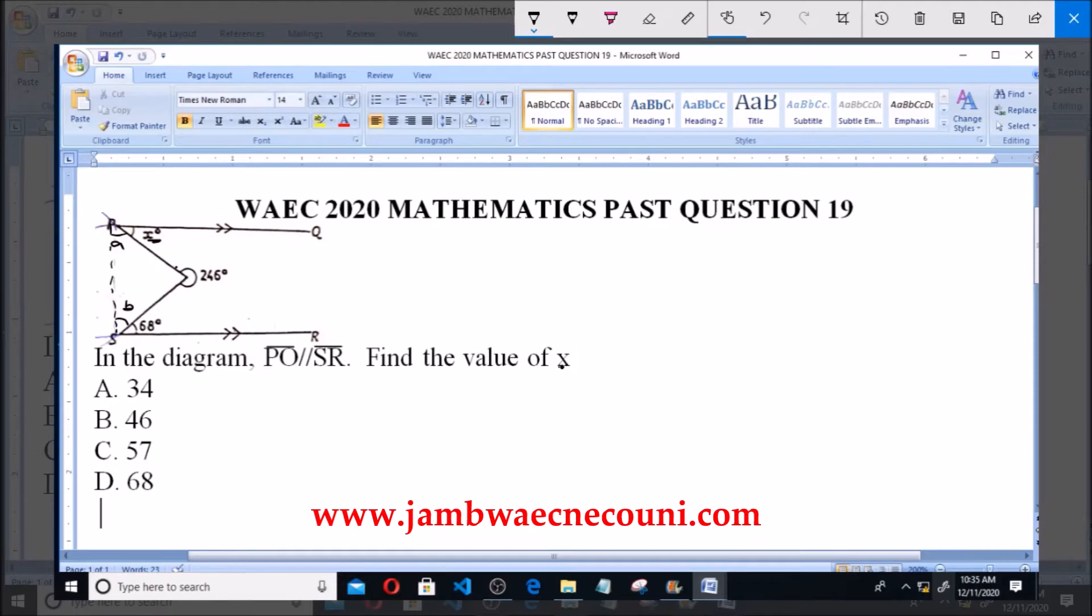b, and let's call this angle y. So we have that y is equals to 360 minus 246, angle at a point.